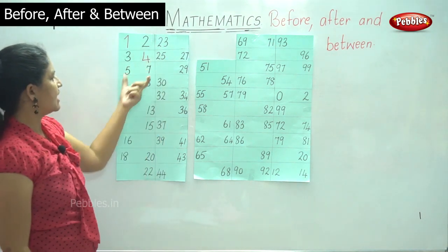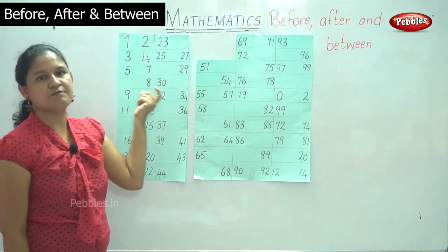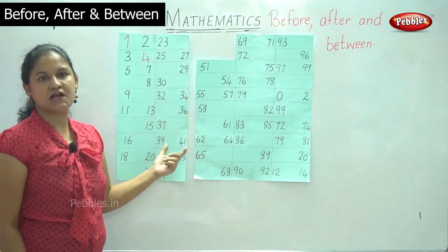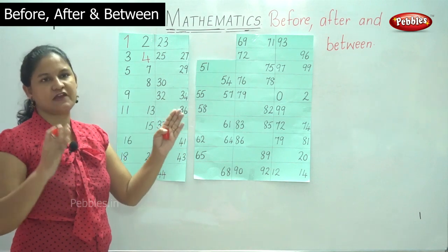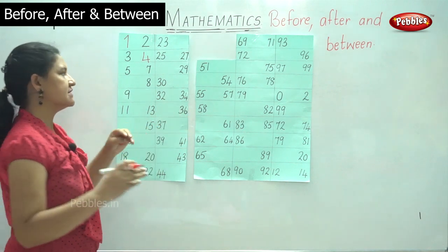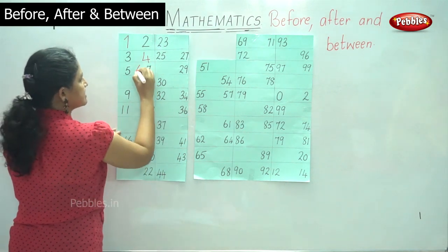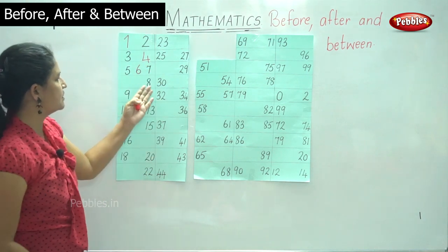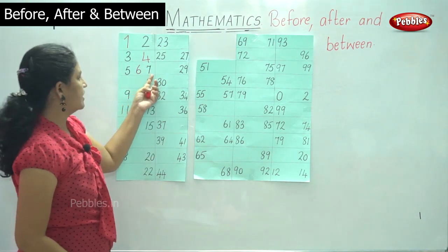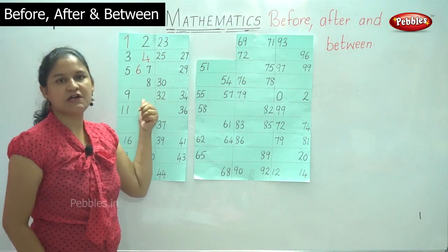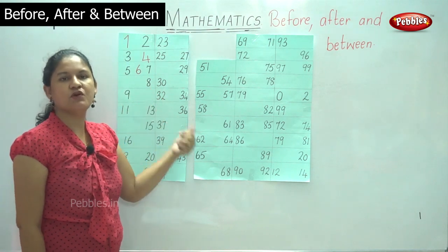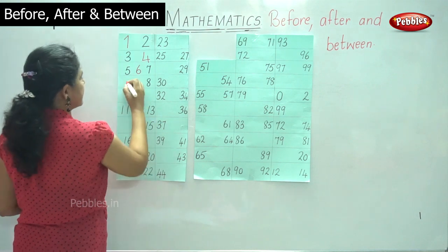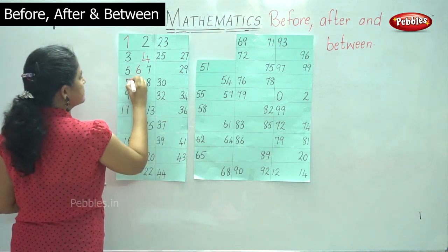Then we have numbers five and seven, and we want to know what number comes between number five and number seven — it is number six. Next, we have number eight and what number comes before number eight — it is number seven.